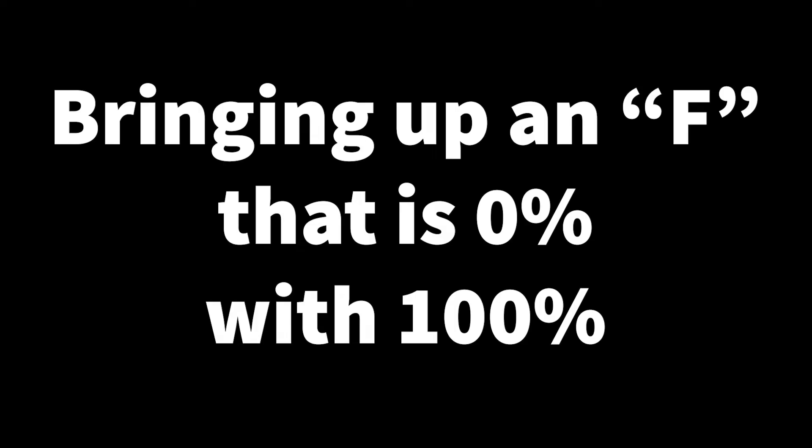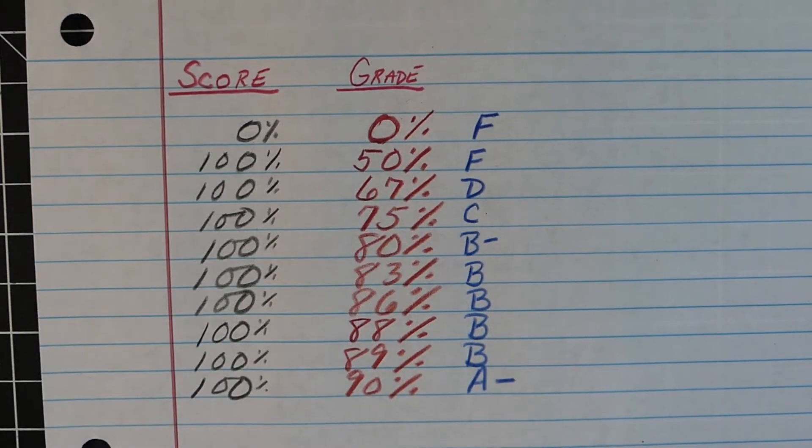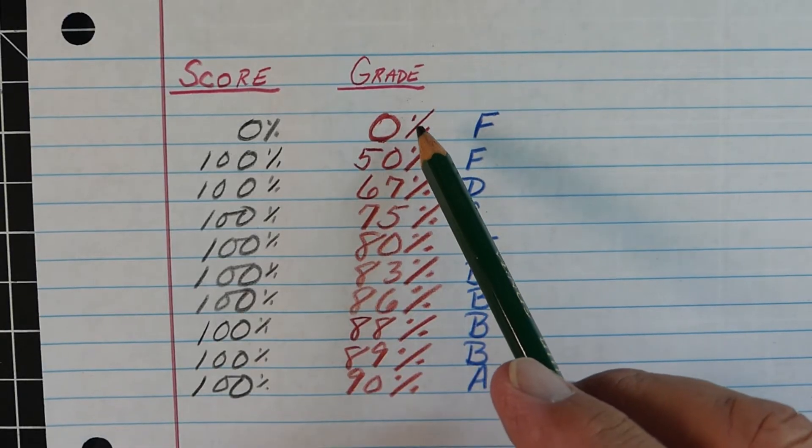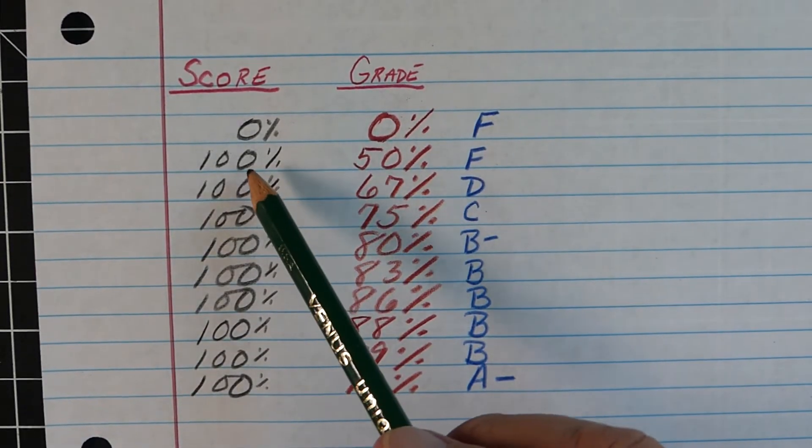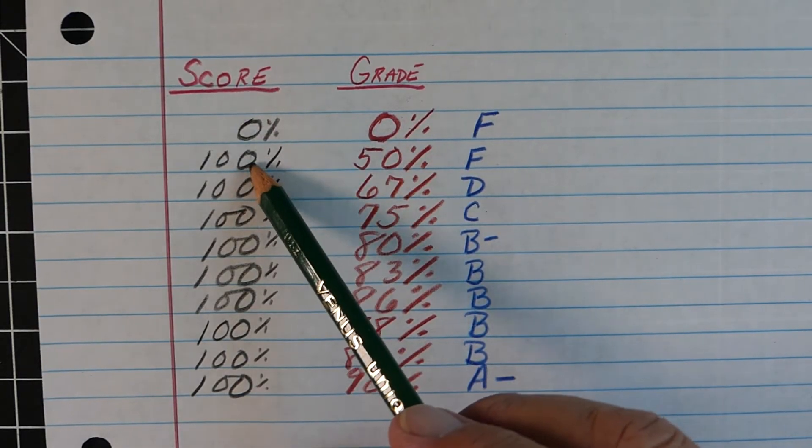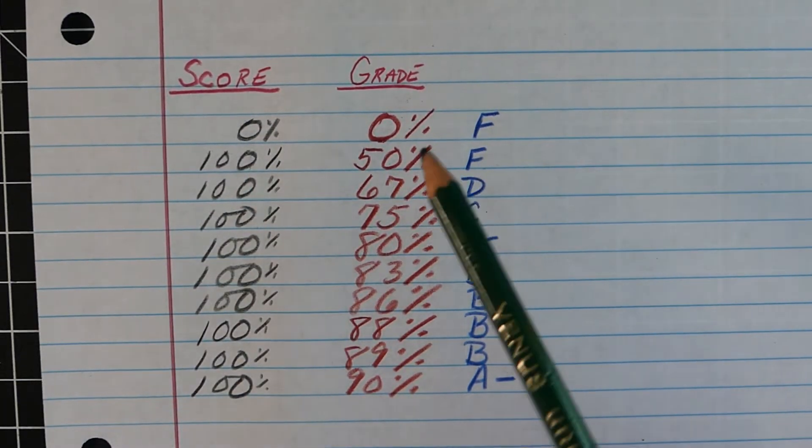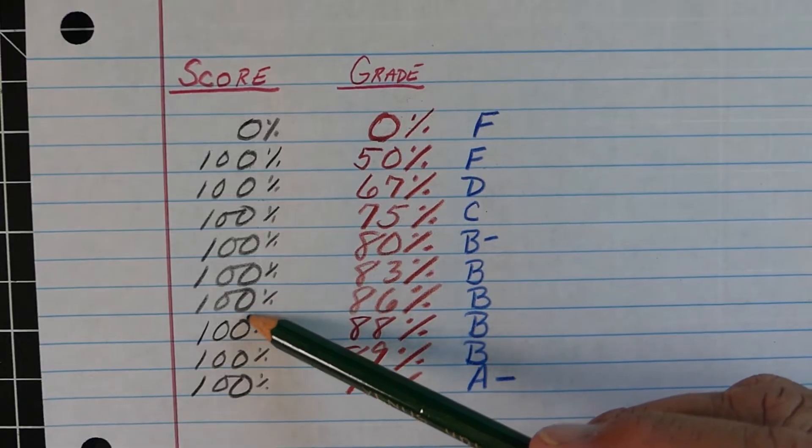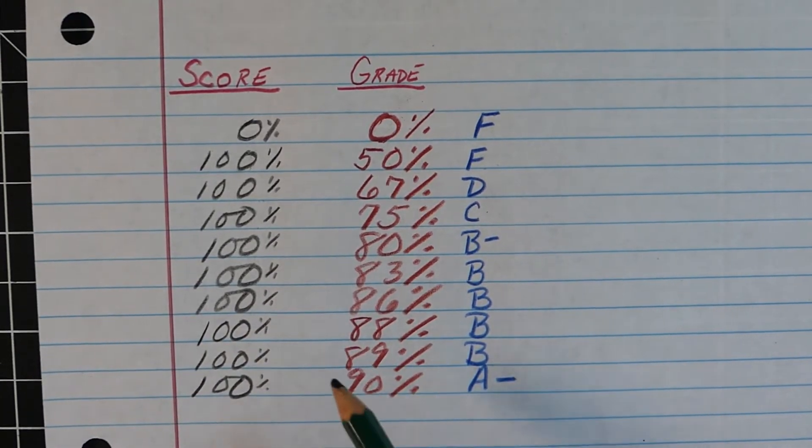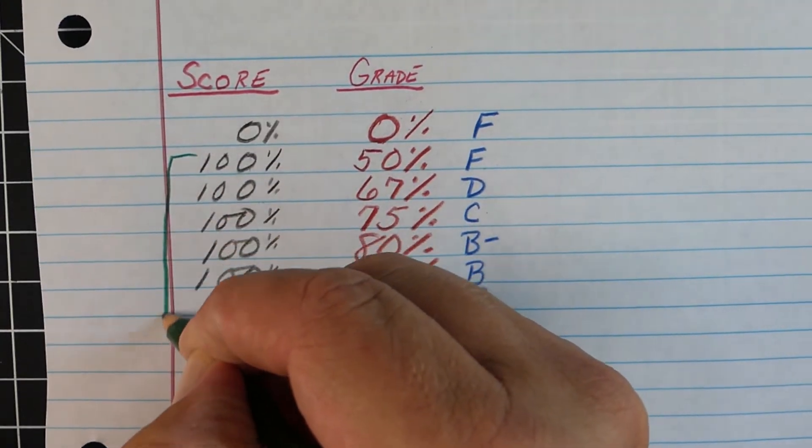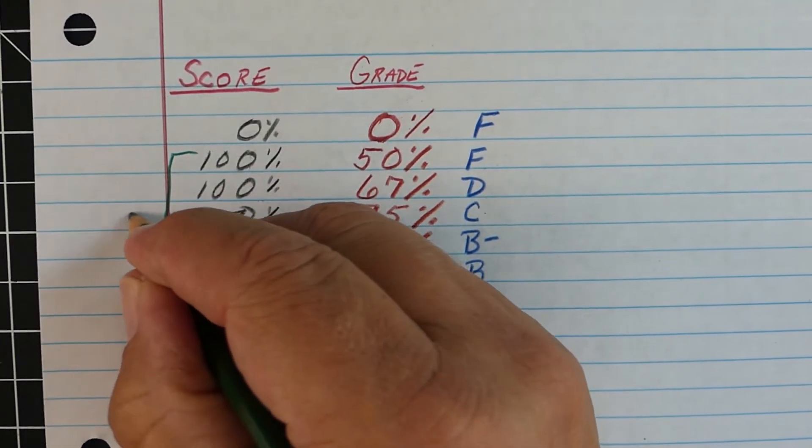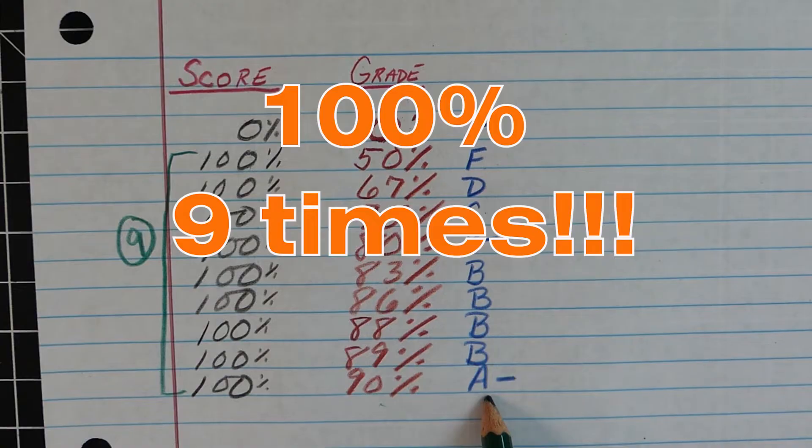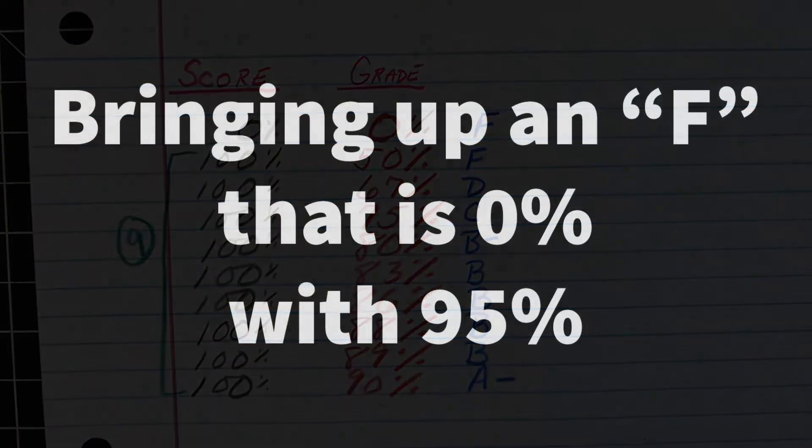Here's an example of a situation where we got 0% on our first grade and then kept getting 100% from that point on. How much work would it take to get us back up to an A? When we get our first 100%, we're now still at an F but at least it's up to 50%. Our second 100% would get us up to a D. As we keep gathering 100%, which is a pretty hard score to get every single time, it would take us a total of nine straight 100% just to get back to an A-.